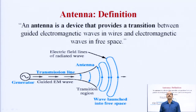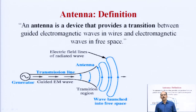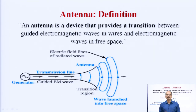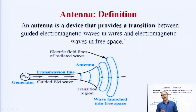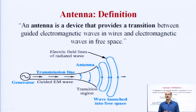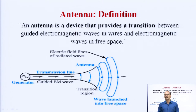As per the definition of telemetry, aap kisi remote location pe located kisi bhi sensor se ya kisi bhi instrument se kuch readings lete hain, kuch measurement perform karte hain, and after that measurement you collect some kind of data, and that data you have to transfer from one place to another. Jo bhi aapka telemetry ka part hai, that is basically on the remote location — aisi jagah hai jahan par har koi nahi pahunch sakta. So in that case you are maintaining a transmitter at that side and a receiver on the other side, and unke beech mein aapka channel hai jiske through aapka data ek jagah se doosri jagah ja raha hai.